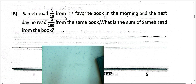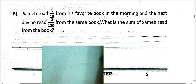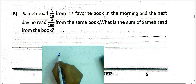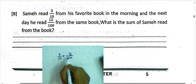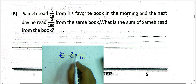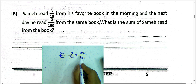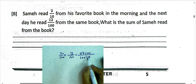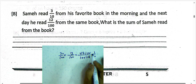Next question: Sam reads 3 over 10 from his book in the morning. The next day he read 12 over 100 from the same book. What is the total sum read? We add 3/10 and 12/100 by converting: 30/100 plus 12/100 equals 42/100. Simplifying by dividing by 2 gives 21 over 50.